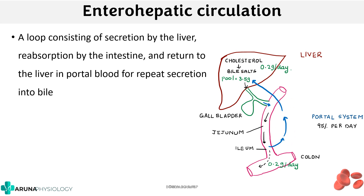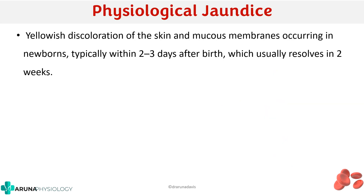Now for an applied aspect: physiological jaundice. This is the yellowish discoloration of skin and mucous membranes occurring in newborns, typically within 2 to 3 days after birth, which usually resolves in 2 weeks. It is normal and you don't have to be worried about it because it usually resolves within 2 weeks.